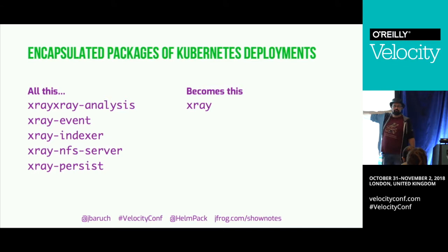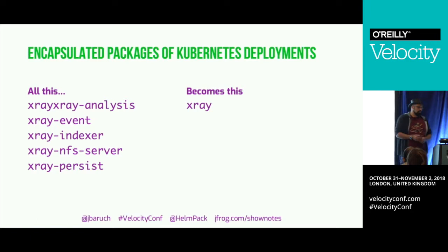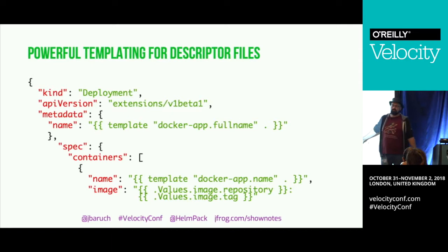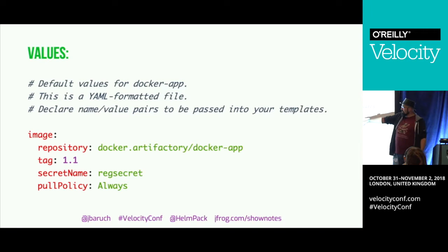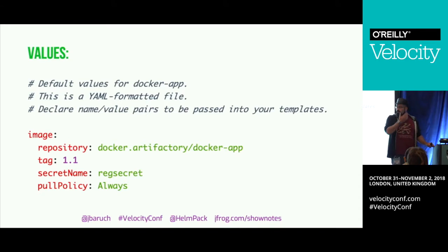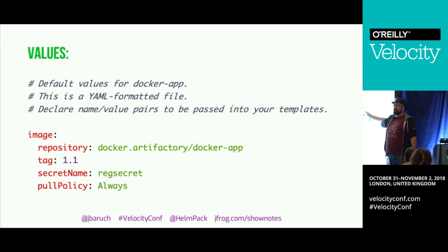Or we can say: just use Helm. We have one chart that encapsulates all of those. It also solves the problem of changing details inside our Kubernetes deployments by providing a templating engine. The Docker image tag '1.0' is replaced with a template, which can be substituted at runtime by something in your values file — so you put '1.1' there, or even override it at runtime when you deploy.